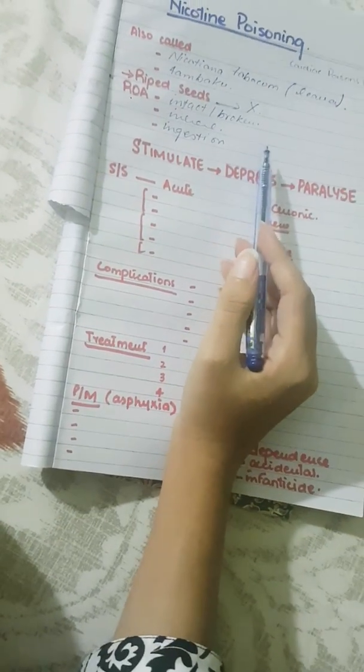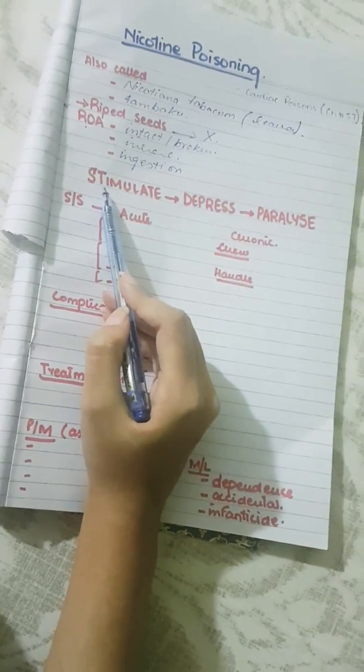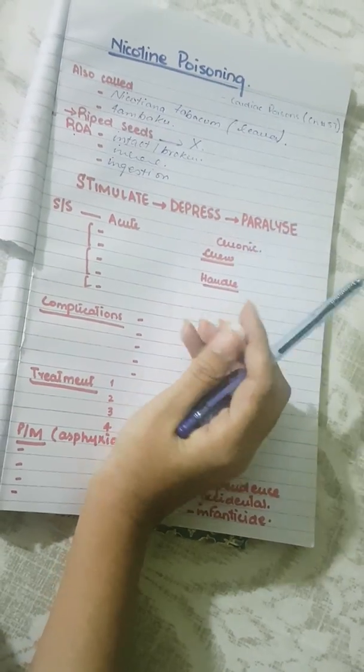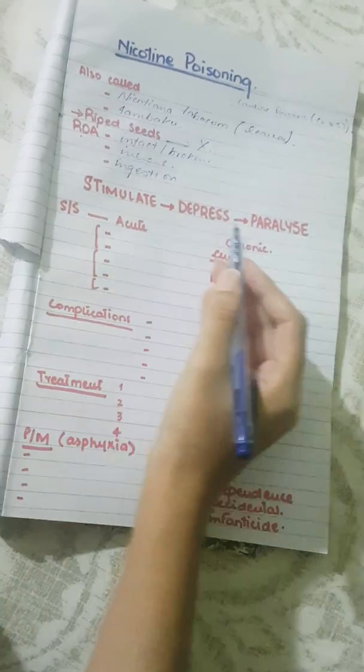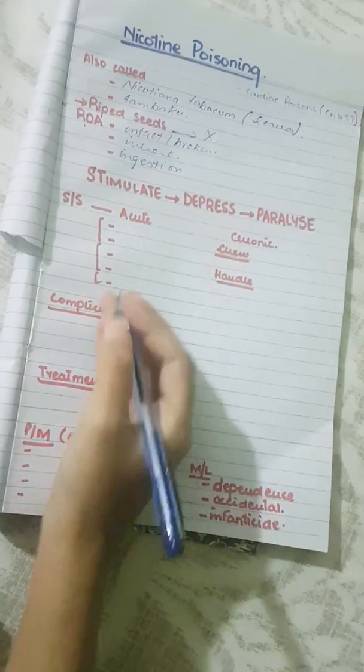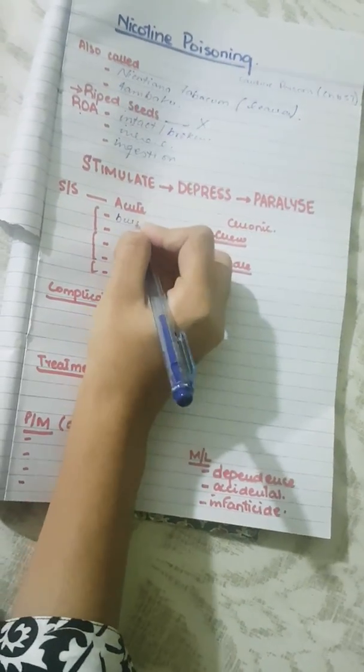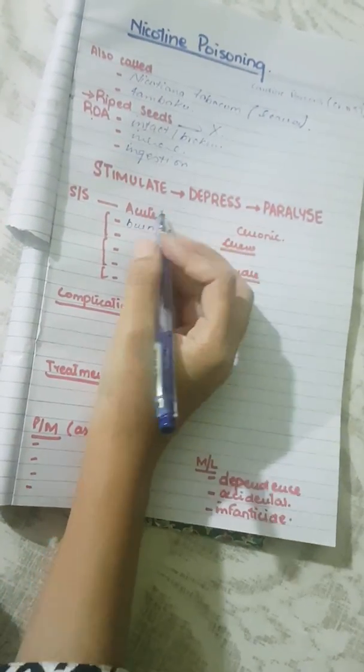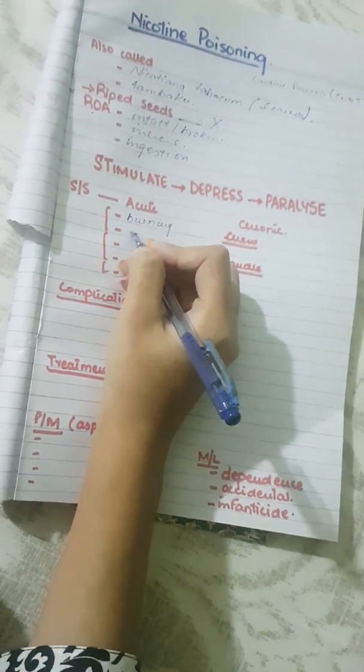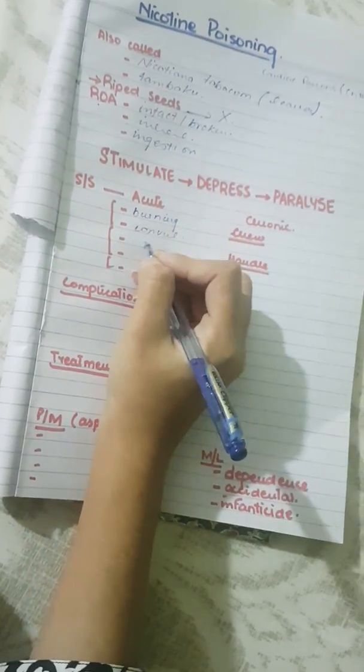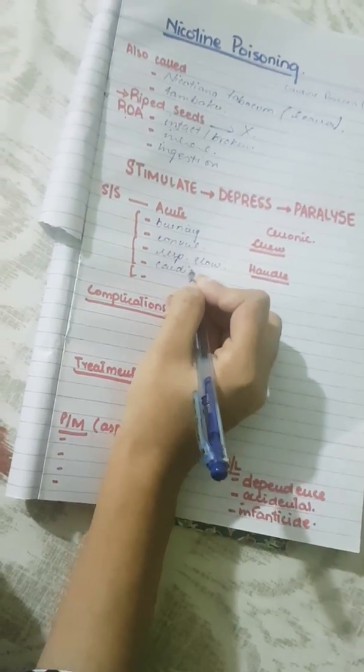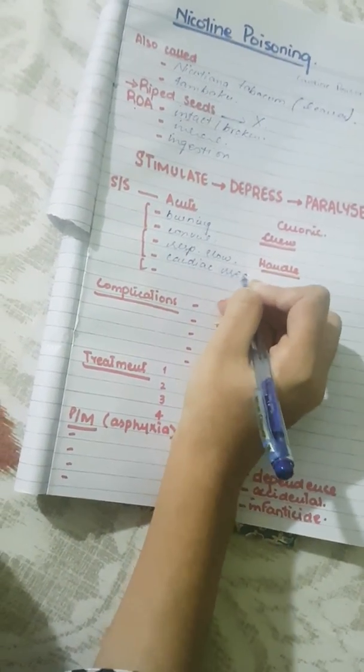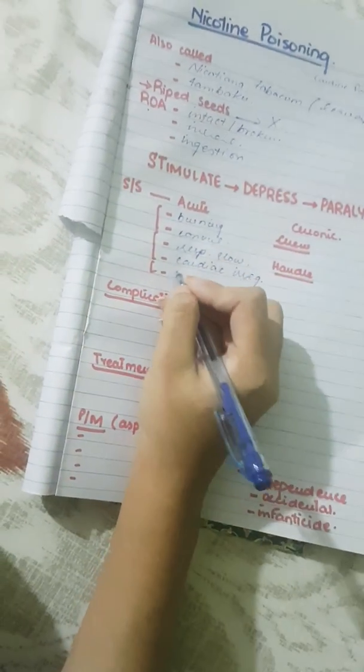We need to remember that nicotine poisoning first stimulates, then depresses, and then paralyzes our body or the autonomic ganglia. Signs and symptoms in acute poisoning may include burning sensation upon ingestion, convulsions, respiratory slowing, cardiac irregularity, and coma.